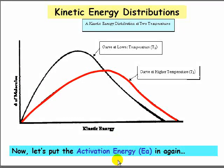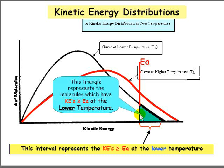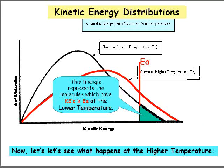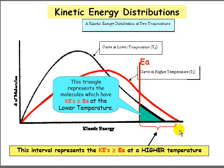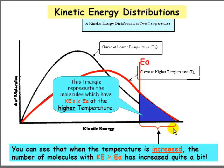Now let's put the activation energy EA in again. This interval represents the molecules with kinetic energy greater than or equal to EA at the lower temperature — this triangle represents all of those molecules. At the higher temperature, here is the interval for molecules with kinetic energy greater than or equal to EA. When the temperature is increased, the number of molecules in this category has increased quite a bit.